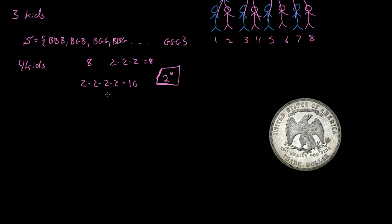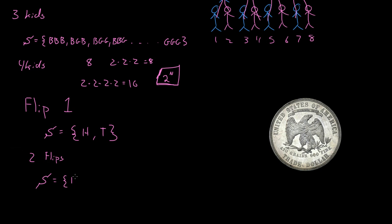Now let's go to flipping a coin. Let's say you flip a coin one time. What's the sample space? Well, you can get heads or tails. What about if we flip it twice? The sample space is: heads-heads, heads-tails, tails-heads, or tails-tails. That's the sample space for flipping a coin two times.